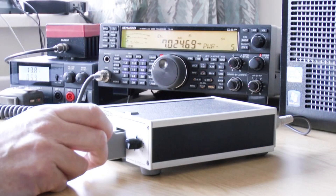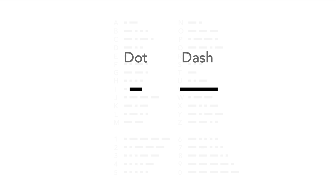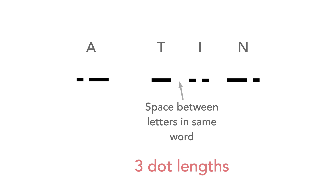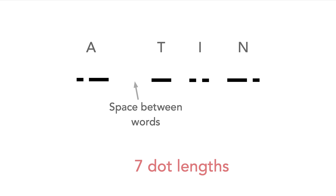Looking at the code itself, it consists of a number of what are called dots and dashes. One dot is one unit long and a dash is three units long. A space between adjacent dots and dashes in one character is one dot length, and the spacing between letters is three dot lengths and the spacing between words is seven.